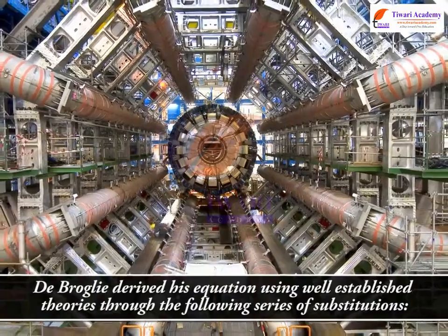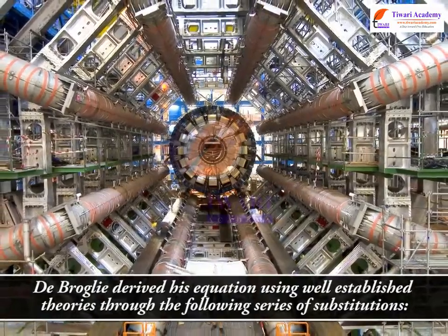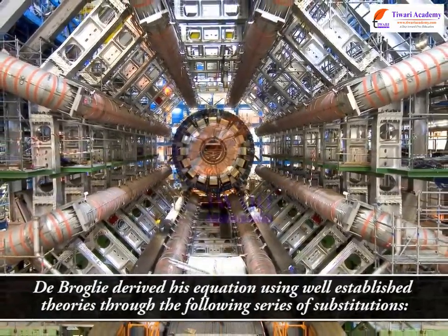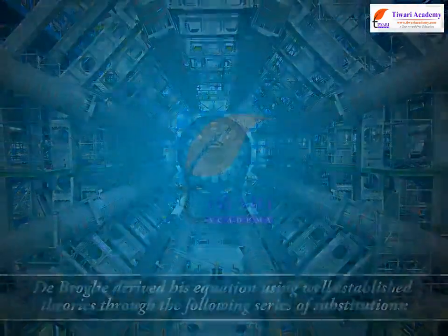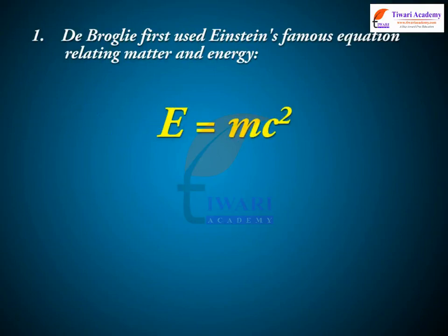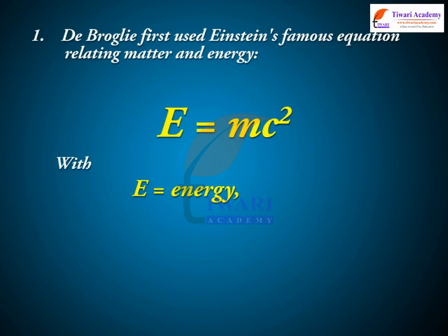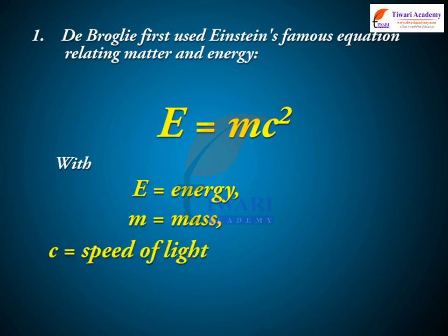De Broglie derived his equation using well-established theories through the following series of substitutions. Step 1: De Broglie first used Einstein's famous equation relating matter and energy, E = mc², where E equals energy, m equals mass, and c equals the speed of light.